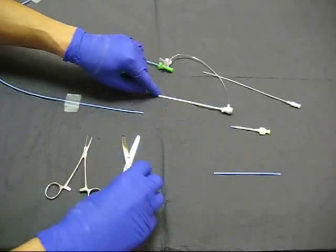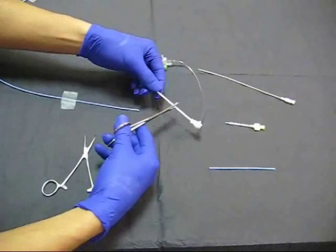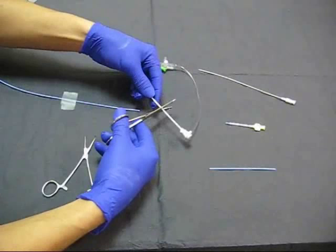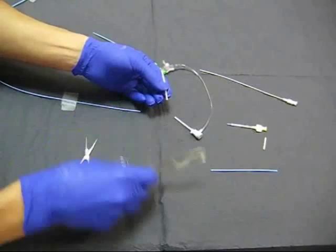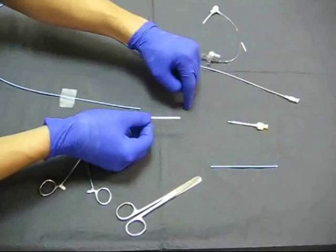What we will do is cut a portion of the sheath and remove the distal tapered part. We are going to use this portion of the sheath to connect the two parts of the guiding catheter.